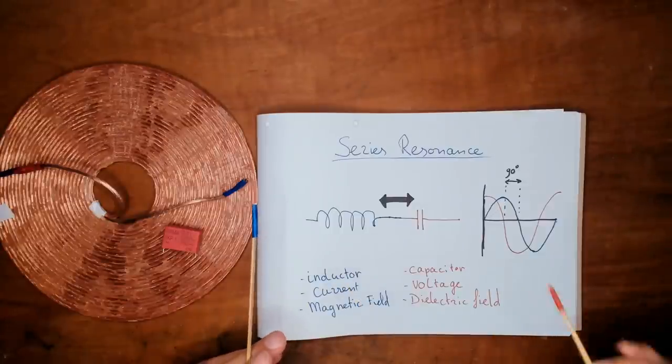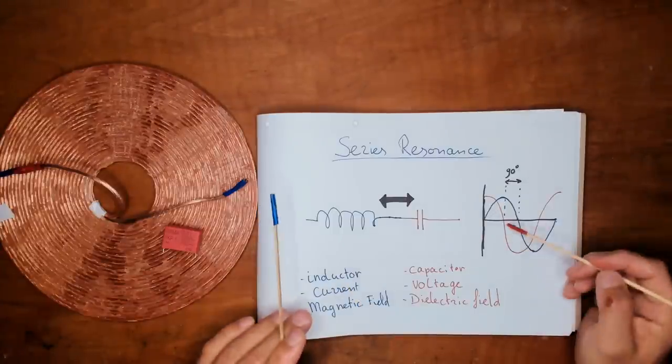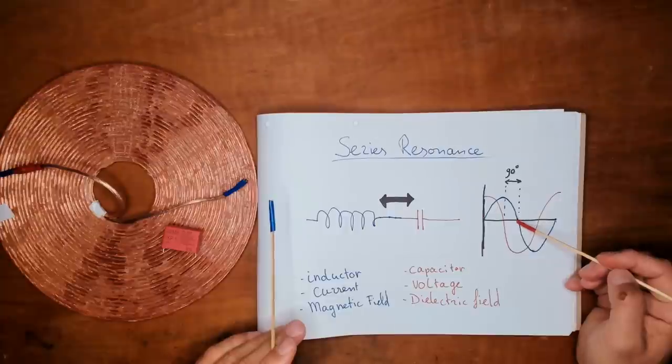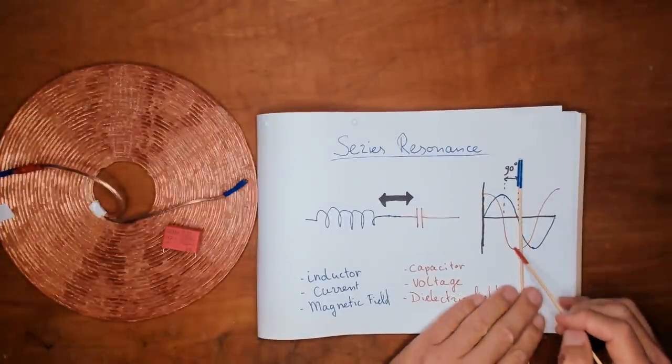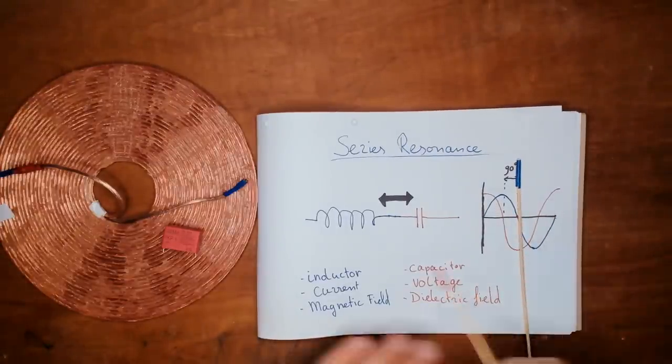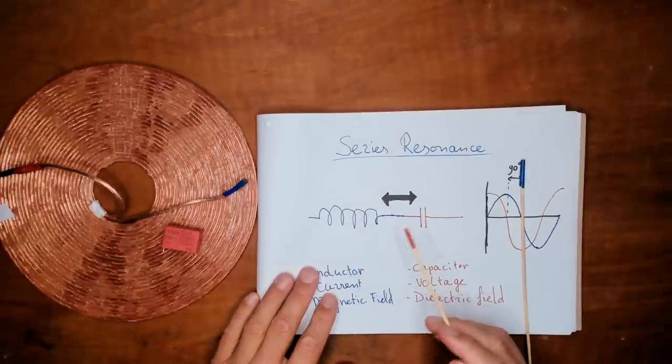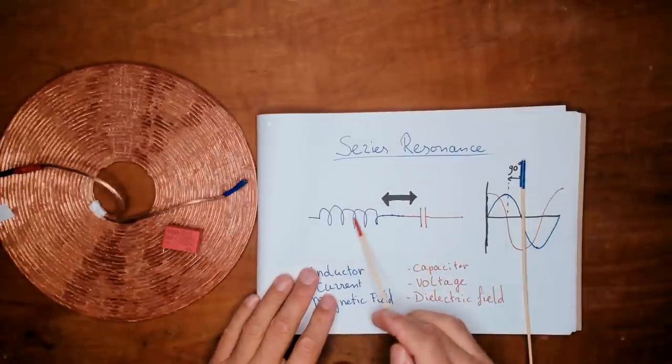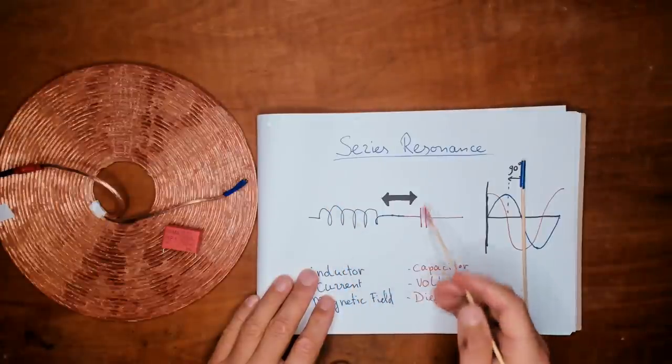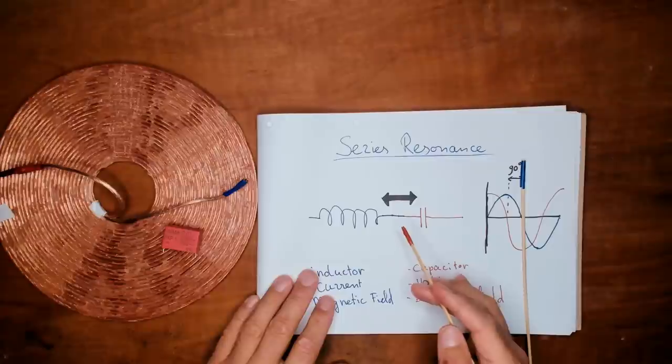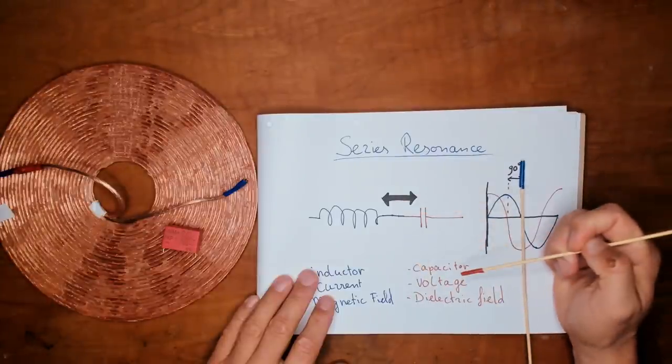One thing to note is that when that current is zero and the voltage is maximum, you could say and this is absolutely true, that there is no magnetic field. The current is zero and there is only a dielectric field. The voltage is maximum.